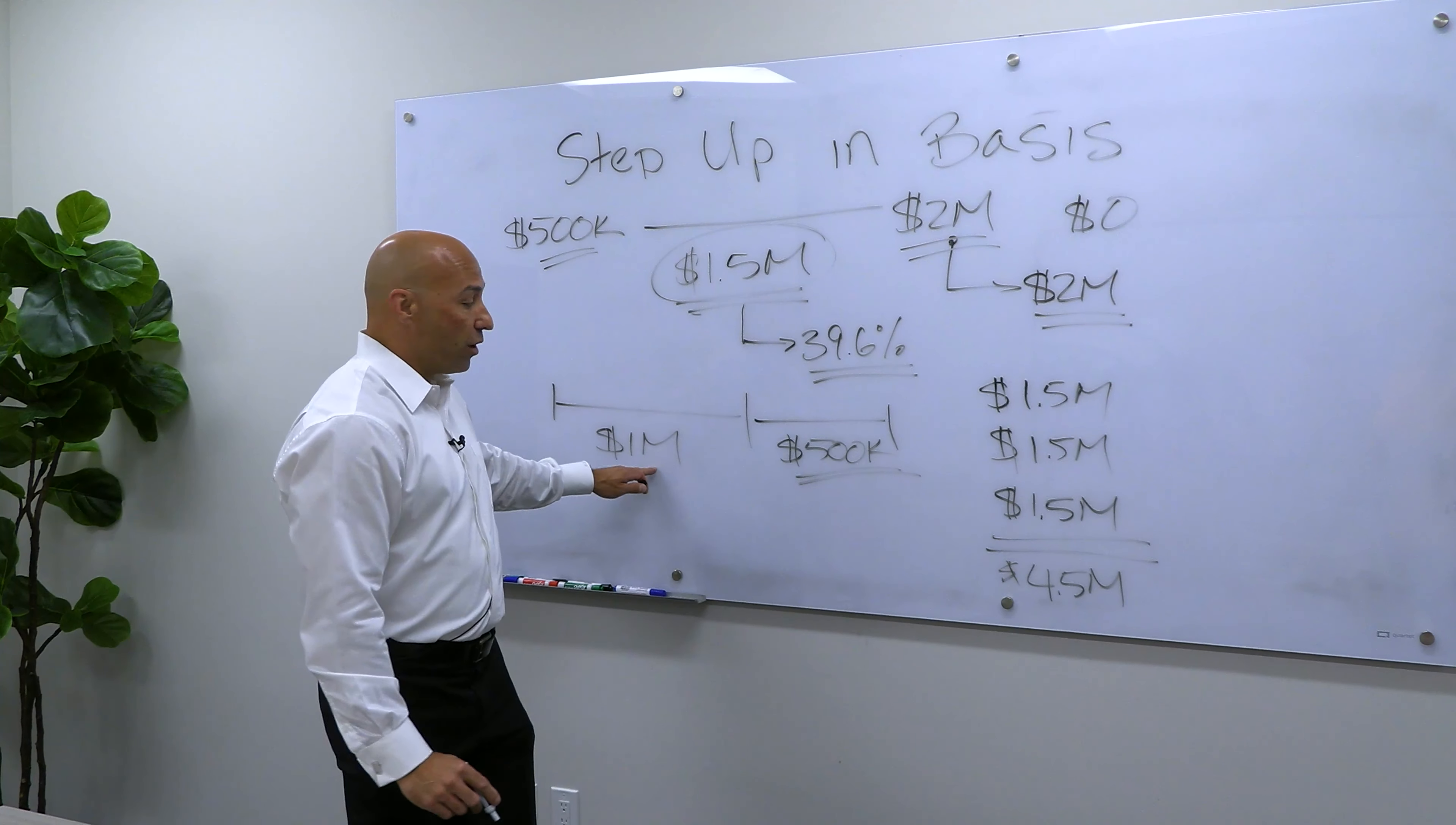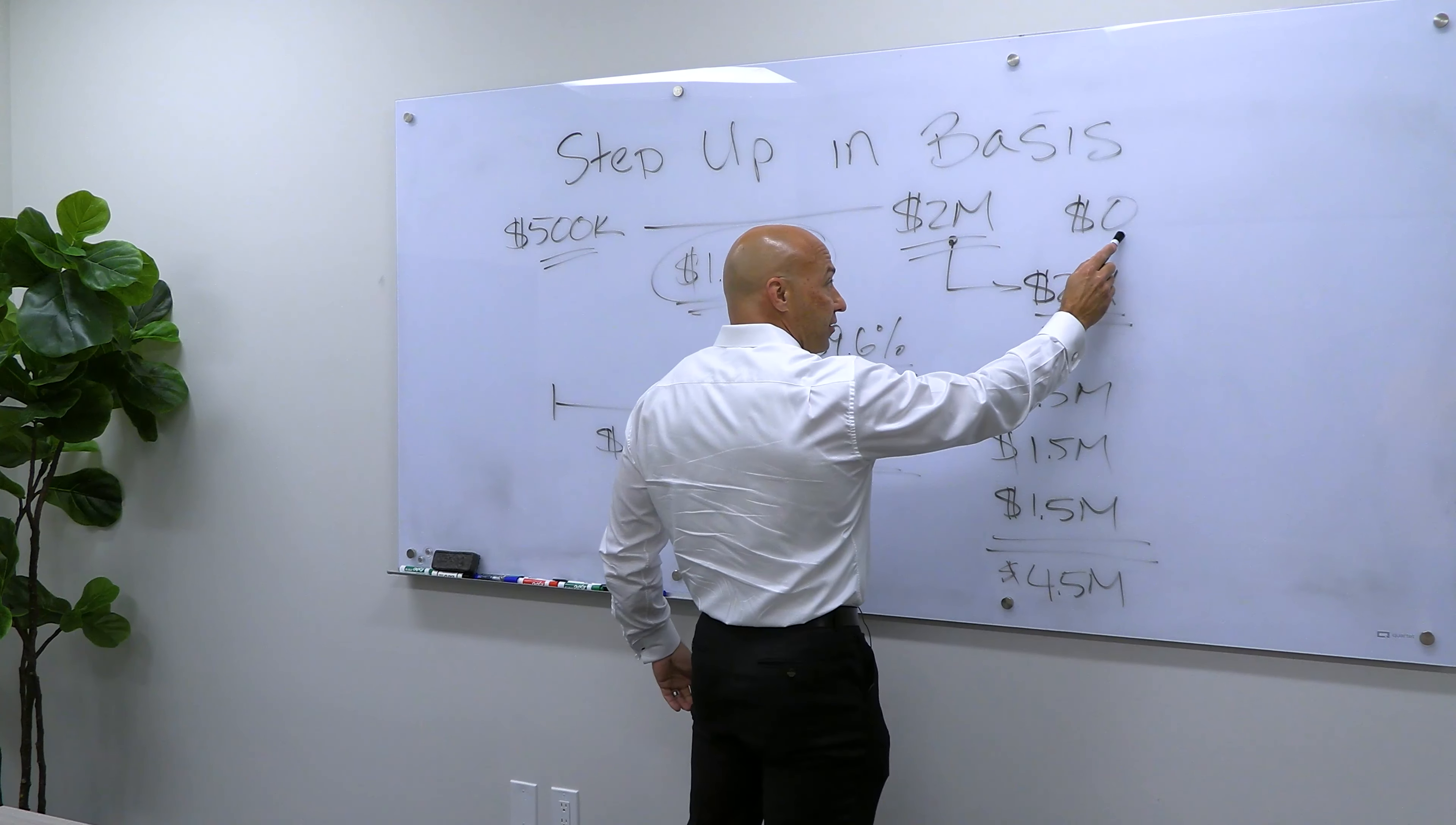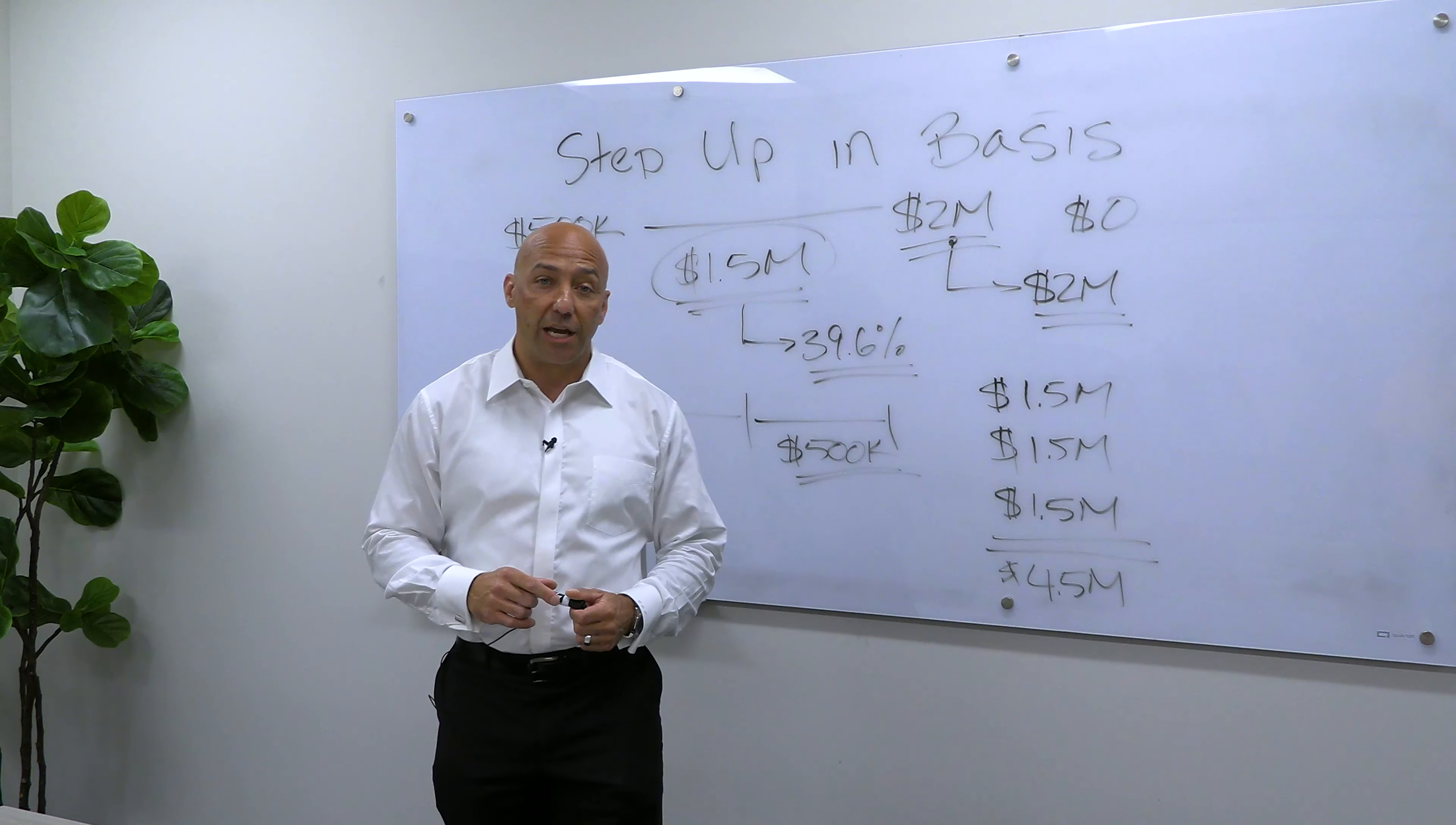With a $1 million maximum step up, that means that my family is still going to owe taxes on $3.5 million of capital gains. Under current circumstances, they wouldn't owe anything. If this were to go into effect, my children potentially owe 39.6% on $3.5 million of capital gains.